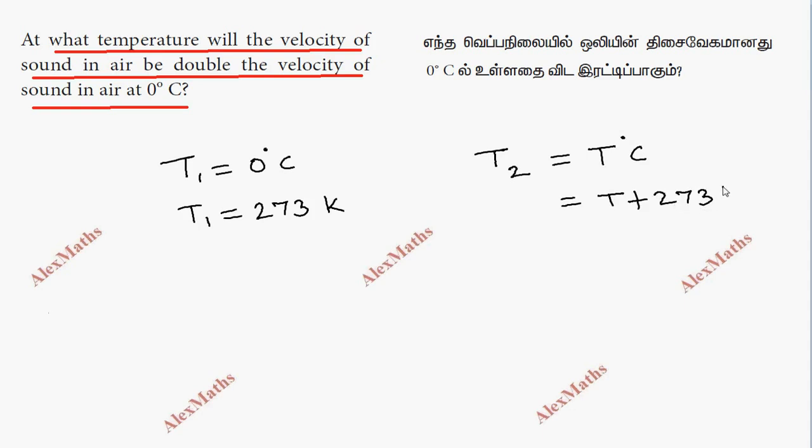Velocity is directly proportional to the square root of temperature. So V1 is directly proportional to square root of T1, and velocity V2 is directly proportional to square root of T2.